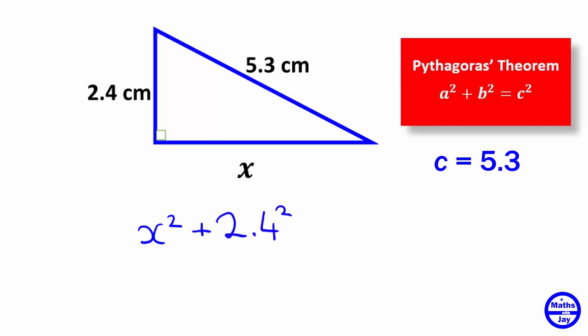It doesn't actually matter which way around you've got a and b. So we could have taken x as b and 2.4 as a. It would have the same effect. And that's going to be equal to 5.3 squared. So this is important that the c must be 5.3.